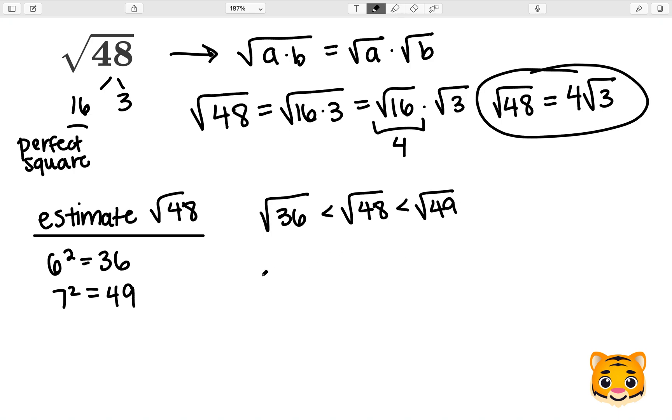Now we can see that because 6 squared equals 36, the square root of 36 will be 6, and because 7 squared equals 49, the square root of 49 will be 7. Therefore, the square root of 48 lies between 6 and 7.